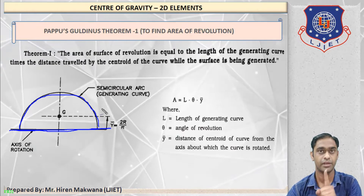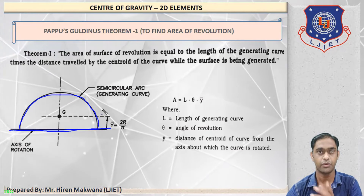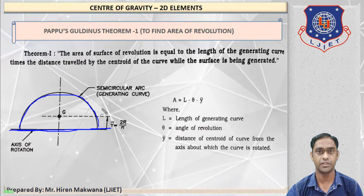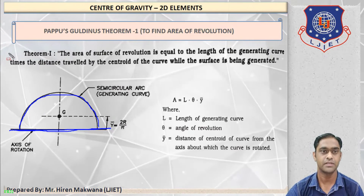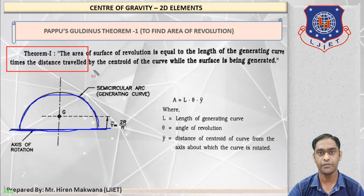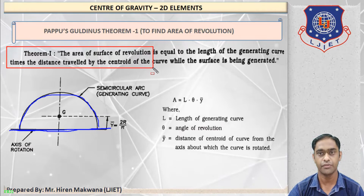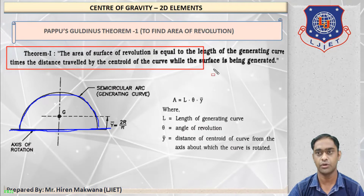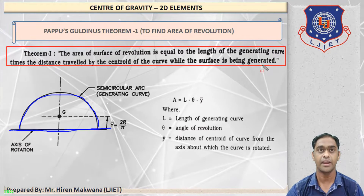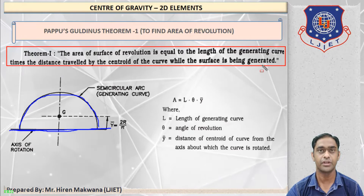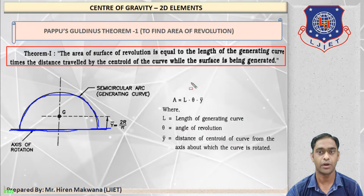So we have to calculate the surface area of this hollow sphere. Now, what is the statement of Theorem 1? The area of surface of revolution is equal to the length of the generating curve times the distance travelled by the centroid of the curve while the surface is being generated.